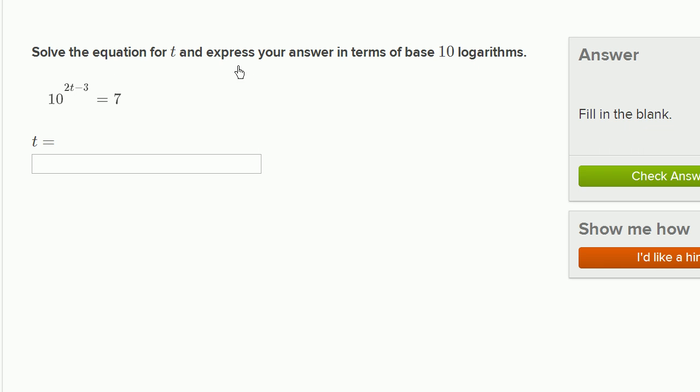Solve the equation for t and express your answer in terms of base 10 logarithms. And this equation says 10 to the 2t minus 3 is equal to 7. And we want to solve for t in terms of base 10 logarithms.